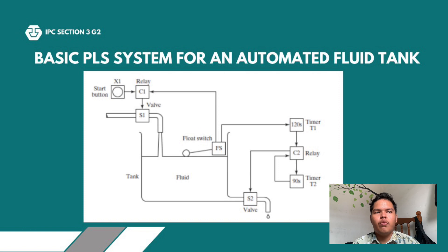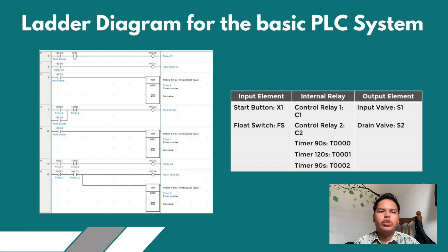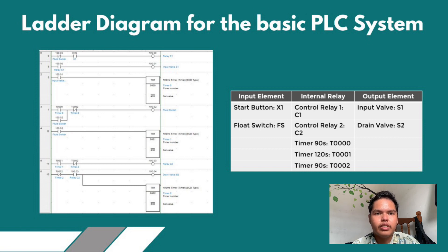Basically, this is our assignment instruction, which gives an illustration of a tank and we need to do the PLC program using the software based on the given instructions. This is our result for the first draft, where the input is X1, the internal relay is Control Relay 1, and the output element is S1.